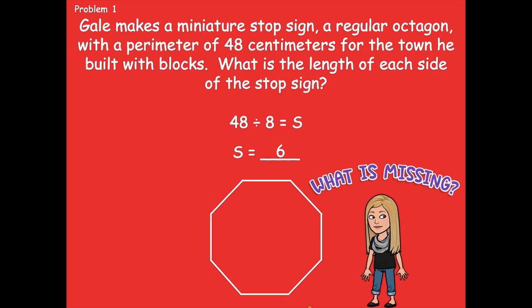Uh-oh. What is missing, friends? I'm missing something. We need the unit — centimeters. I was missing the unit of measure. Remember what we've talked about in the past: this could have been 6 cats, 6 dogs, 6 inches, 6 yards, 6 miles. But in the problem it tells us centimeters. So when it gives us the unit, you need to make sure that you are labeling the unit in your answer. We could also have labeled that as CM for centimeters.